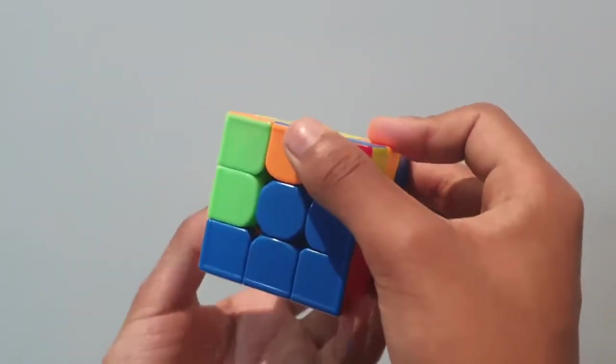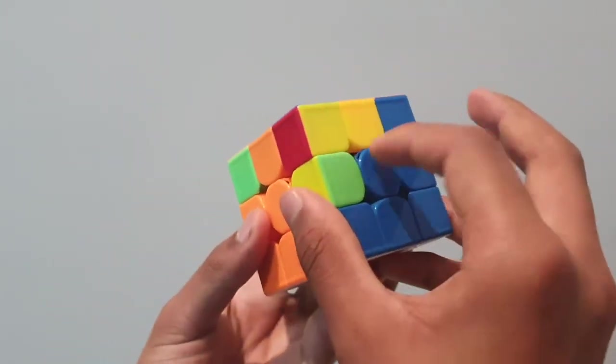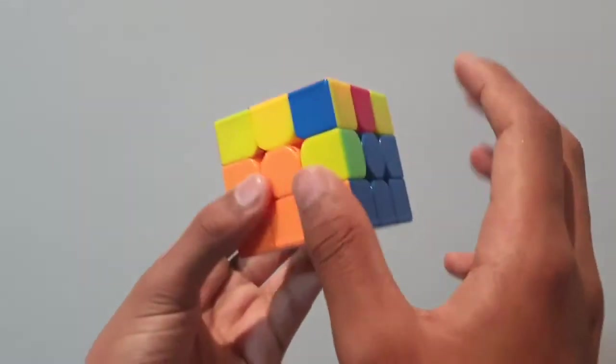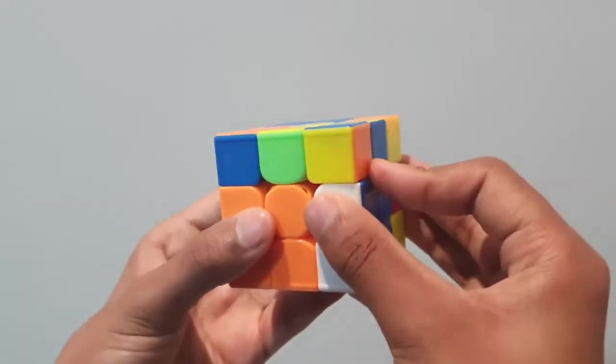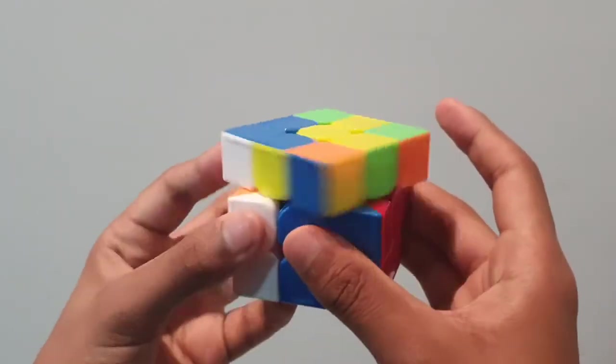We can take this over here, match with the corresponding center piece, forms the inverted T. We turn it to the other side of the blue center piece. Since it's on the right side, we do a right trigger. Shift this backwards, forms the diagonal line, and left trigger. That is our second layer.